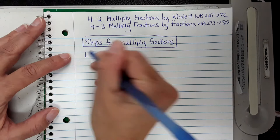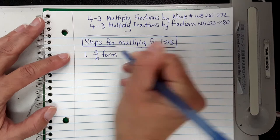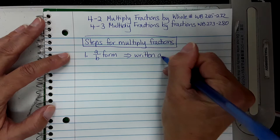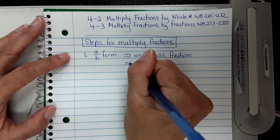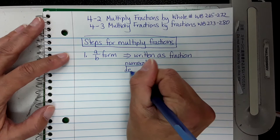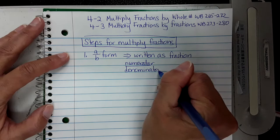Steps for multiplying fractions. Step one: the expression needs to be in a-over-b form, meaning it needs to be written as a fraction. It needs a numerator and a denominator, and if it doesn't have both, you have to change it. The numerator is the number on top of the fraction; the denominator is the number on the bottom — denominator down.